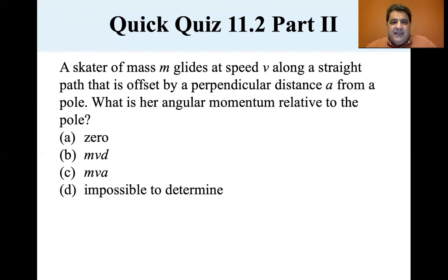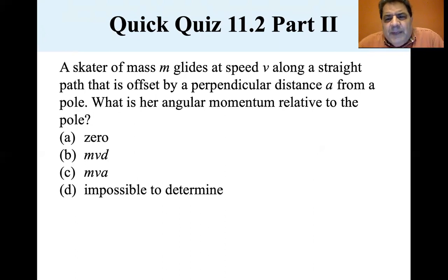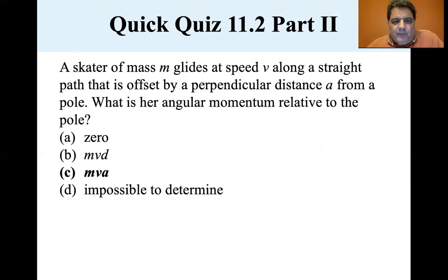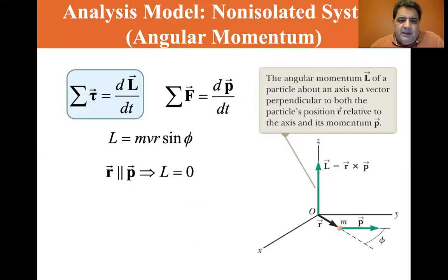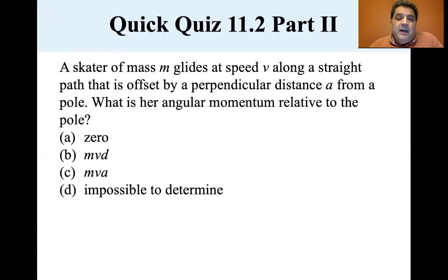Next: a skater of mass M glides at speed V along a straight path that is offset by a perpendicular distance A from a pole. Perpendicular distance A — that's a key word: perpendicular. What is her angular momentum relative to the pole? Zero, MVD, MVA, or impossible to determine? It's MVA. If R is perpendicular to the momentum, the angular momentum is MVR — in this case, MVA.